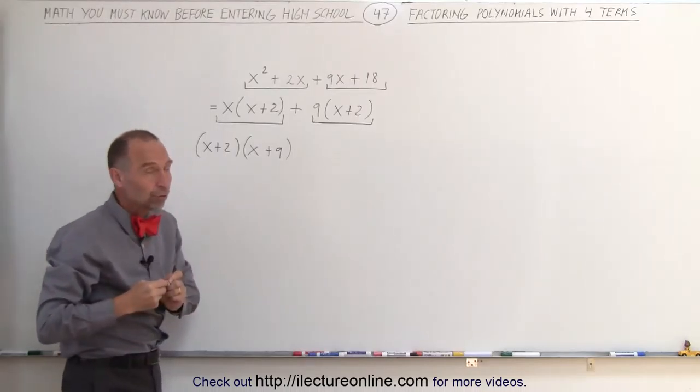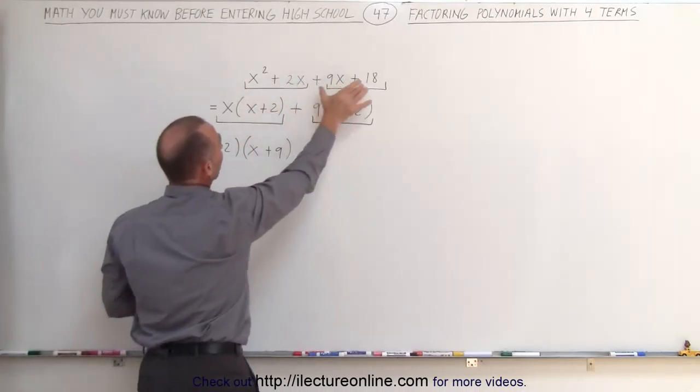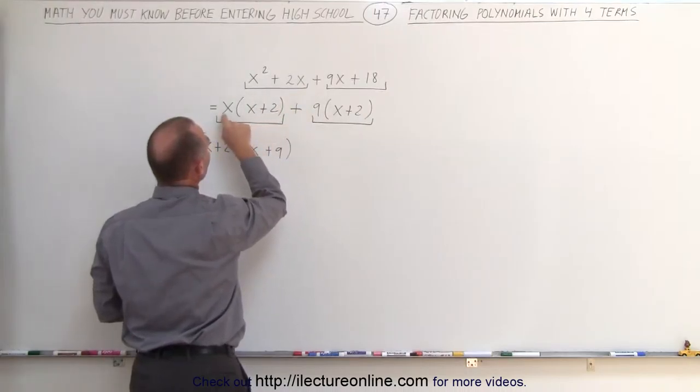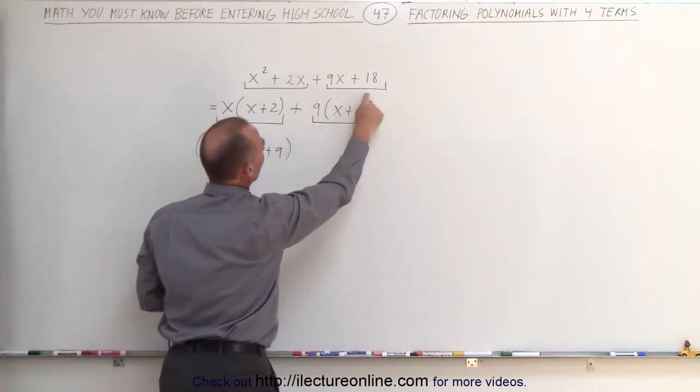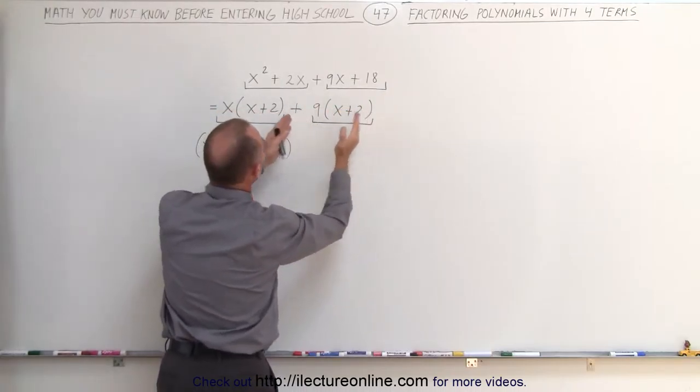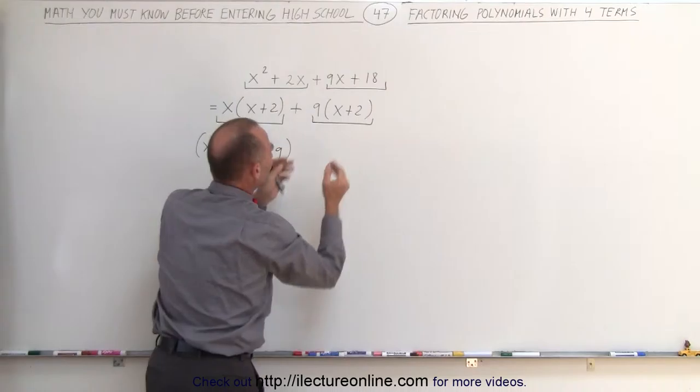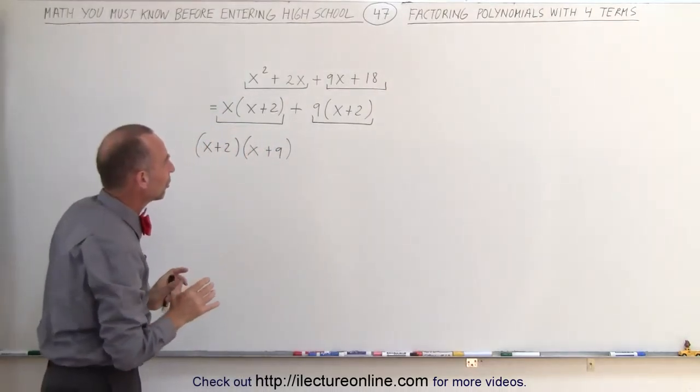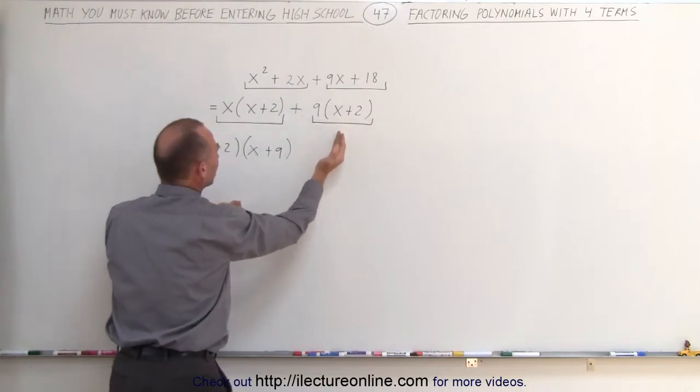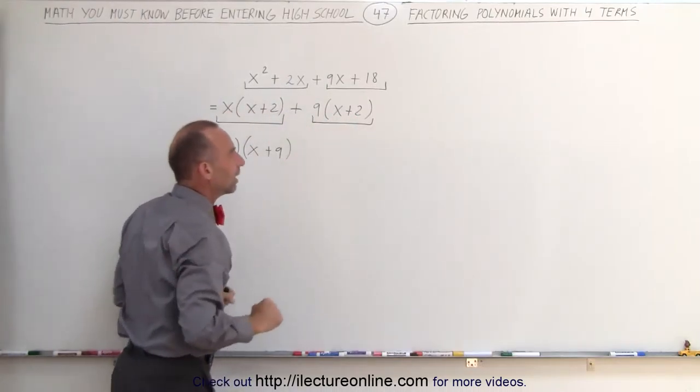Notice what we do: we first group them together in groups of 2. We see what's common in the first group—here x is common. We see what's common in the second group—9 is common. Then when we look at these, putting little brackets underneath to make it more visual, we realize that (x + 2) is common, which means it can be factored out and we're left with (x + 9).